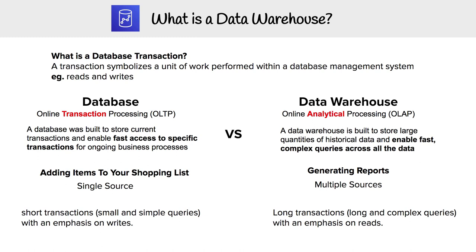An example of a transaction would be reads and writes — that's as simple as that. For a database and a data warehouse, they're going to treat transactions differently. For a database, which uses an online transactional processing system — OLTP — the transactions are going to be short: small and simple queries with an emphasis on writes.